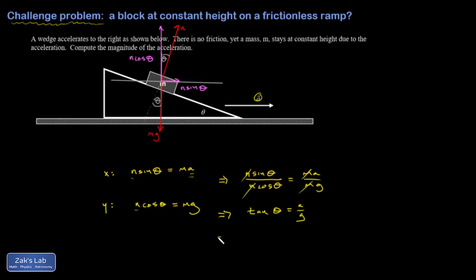And so finally, we get kind of a beautiful answer to this problem. a must be equal to g tangent theta to keep that mass at a constant height.